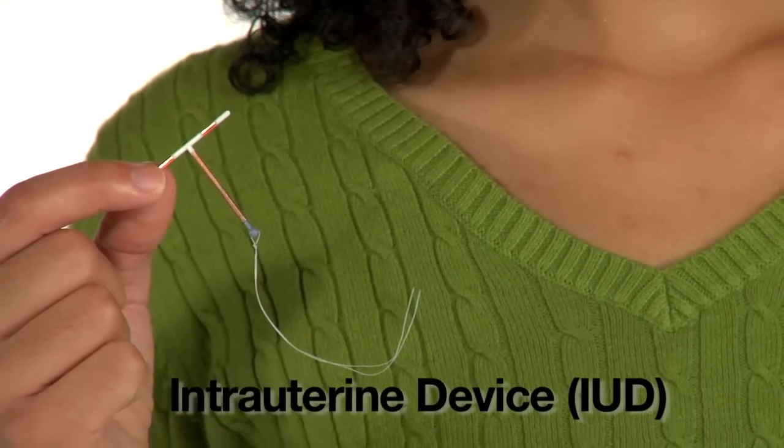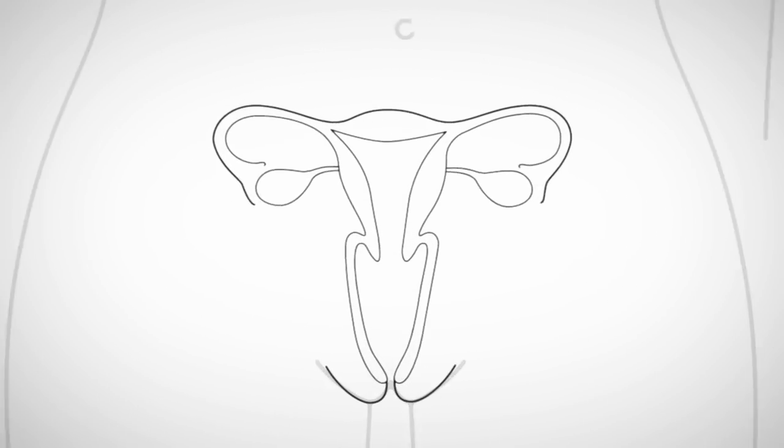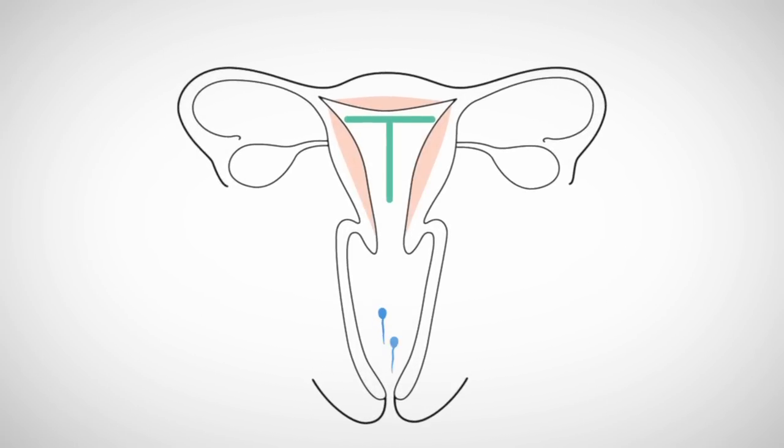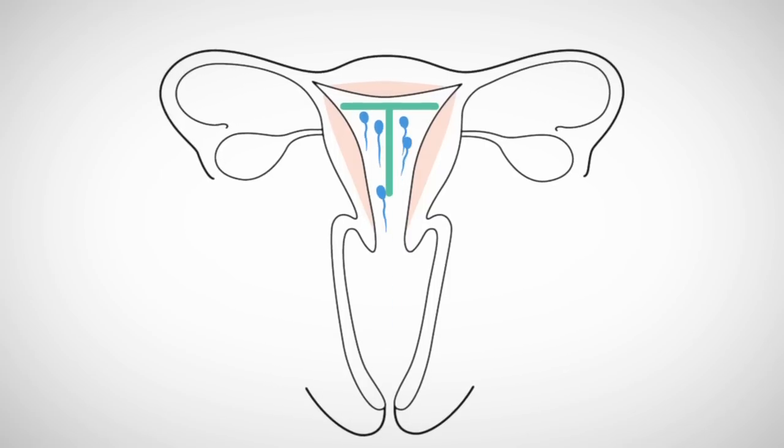An IUD is an intrauterine device. Fancy words to describe a tiny gadget like this one that goes inside your uterus and prevents you from getting pregnant. IUDs prevent pregnancy by changing the lining of your uterus and affecting the way the sperm move, making it harder for them to reach an egg.